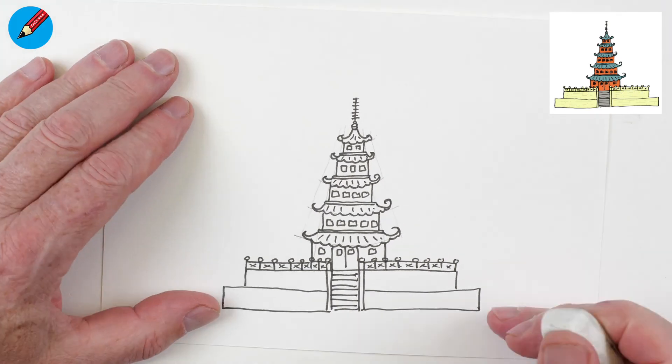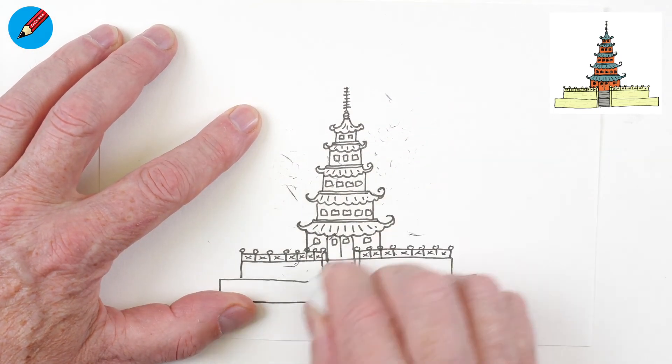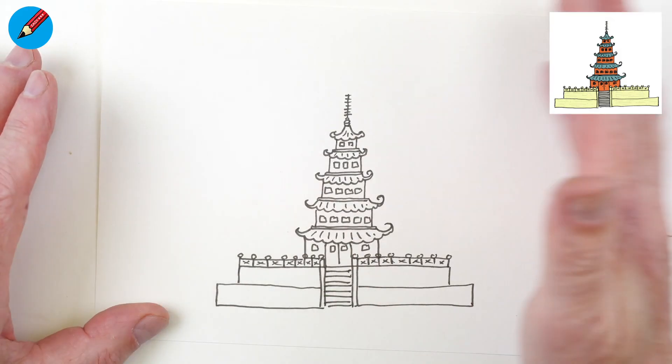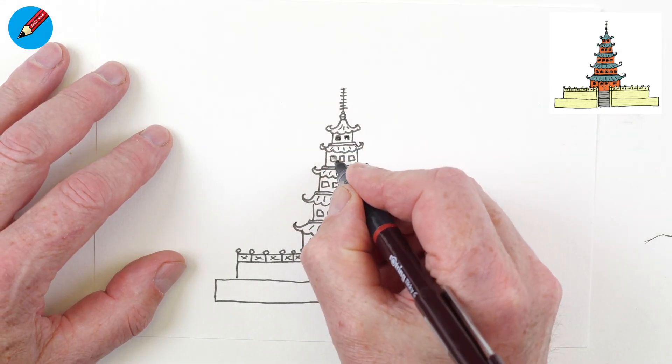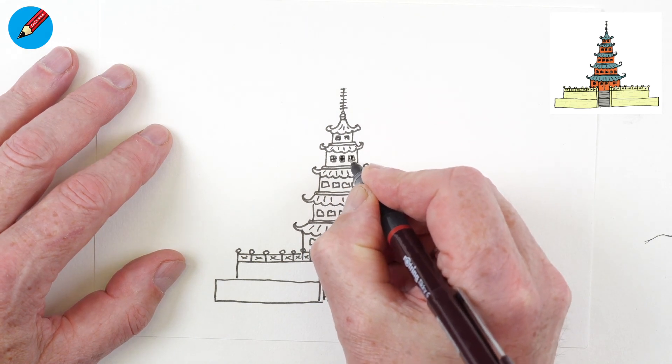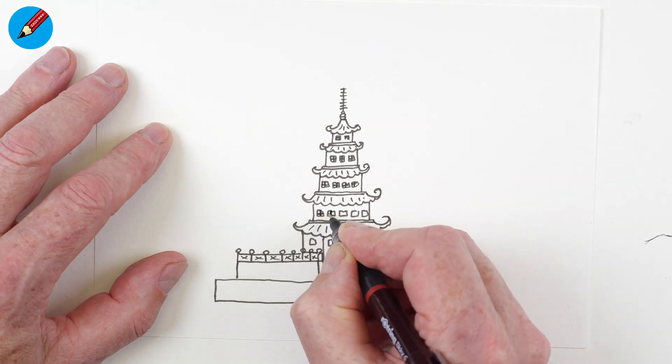And then when you are absolutely sure that it is dry, then you can erase those pencil marks, because you don't want to smudge the ink when it's still wet. And then we can maybe make these windows a bit darker by just putting a little cross in each one like that.